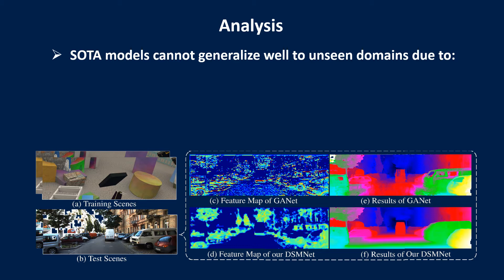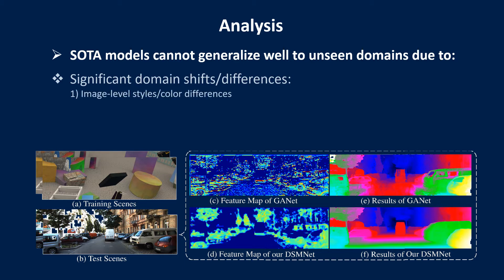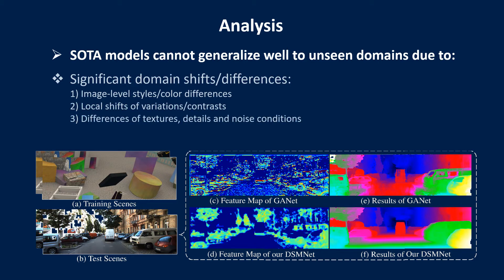The state-of-the-art stereo matching networks cannot generalize well to new domains without retraining or adaptation. This is caused by significant domain differences, including image-level style or color differences, local variations and contrasts, local texture and details, noise conditions, and other complicated domain differences.